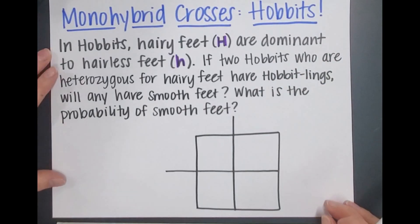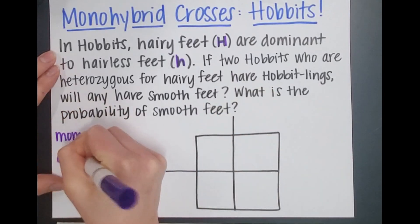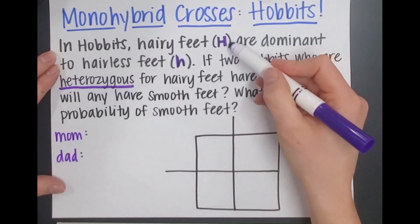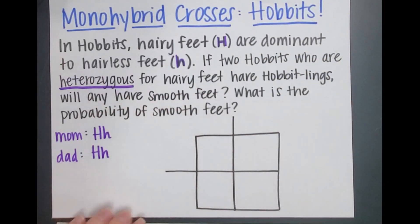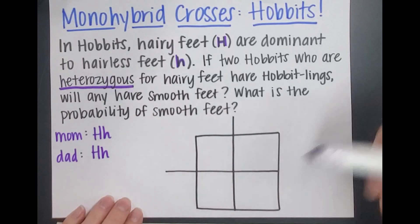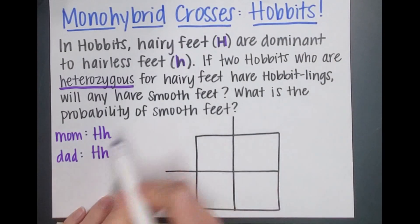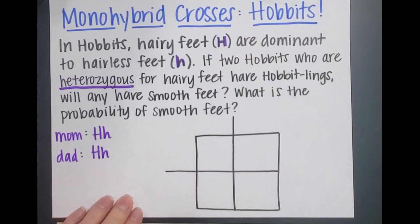We have our mom hobbit and our dad hobbit, and they are both heterozygous. Heterozygous means they have one of each allele — a dominant allele and a recessive allele. So they're both going to be big H, little h. Because they have that big H allele, they're going to have hairy feet. So both parents here have hairy feet.